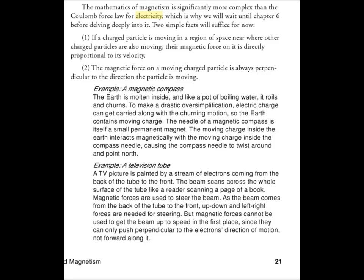Example. A magnetic compass. The earth is molten inside, and like a pot of boiling water, it roils and churns. To make a drastic oversimplification, electric charge can get carried along with the churning motion, so the earth contains moving charge. The needle of a magnetic compass is itself a small permanent magnet. The moving charge inside the earth interacts magnetically with the moving charge inside the compass needle, causing the compass needle to twist around and point north.